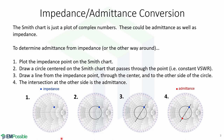Here is a graphical representation of how you do it. First, you plot the impedance point. Then you draw a circle centered on the Smith chart that passes through the point to obtain your constant VSWR circle. Then we draw a line from the impedance point passing through the center and going to the other side. The intersection is your admittance.